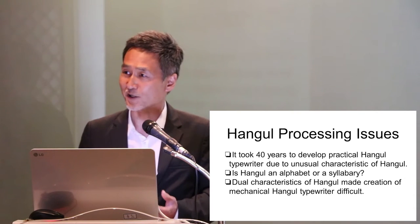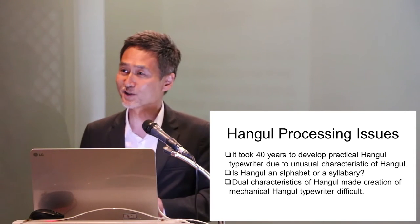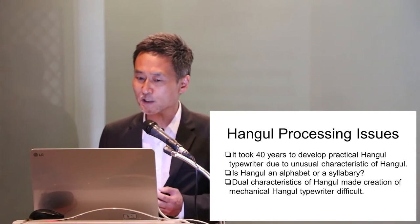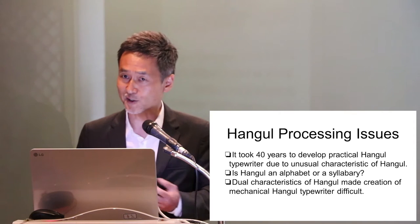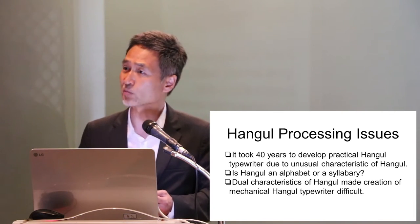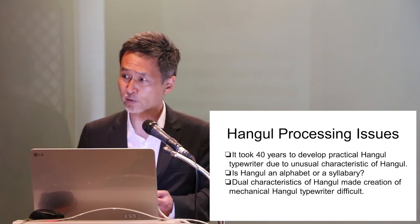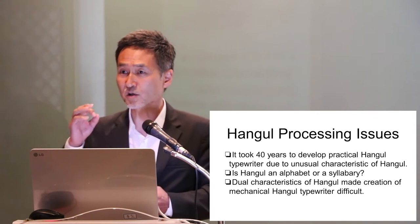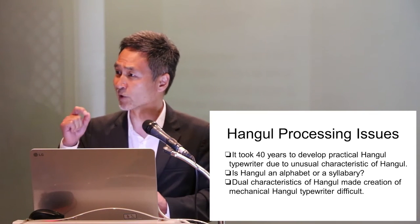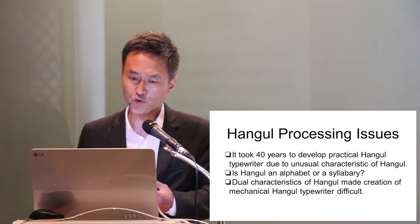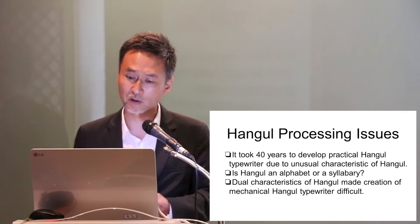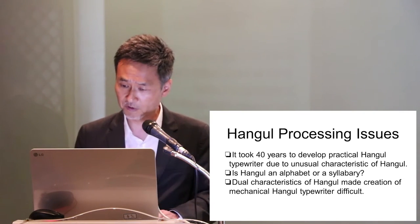Why did it take so long? The reason is that Hangul is unique in that, although it is an alphabet, it also has characteristics of a syllabary — like Japanese kana or Egyptian hieroglyphics — where a symbol stands for a syllable instead of an alphabetical letter. This dual characteristic of Hangul made creating a mechanical Hangul typewriter a difficult process.